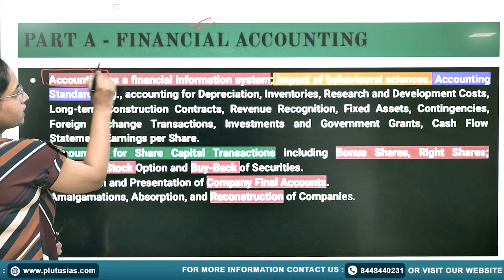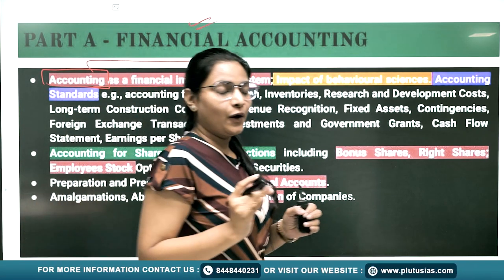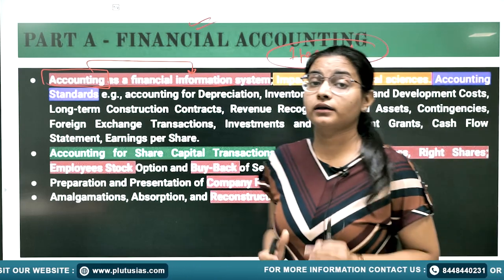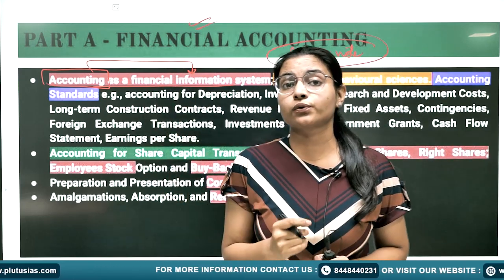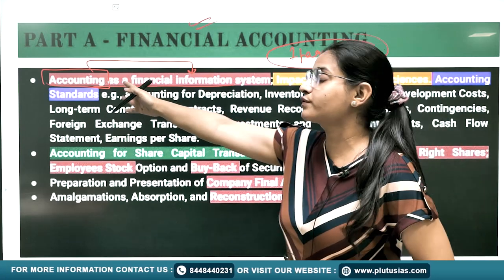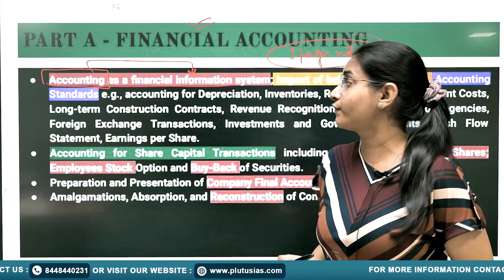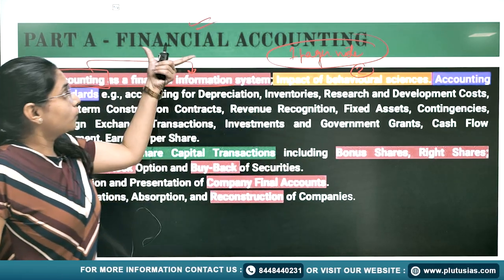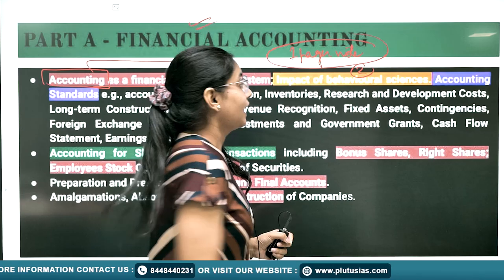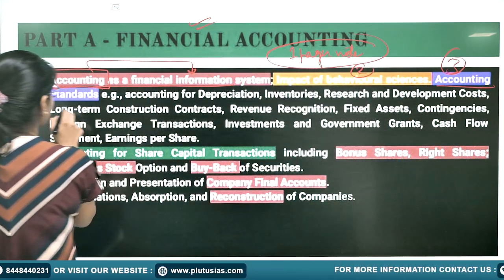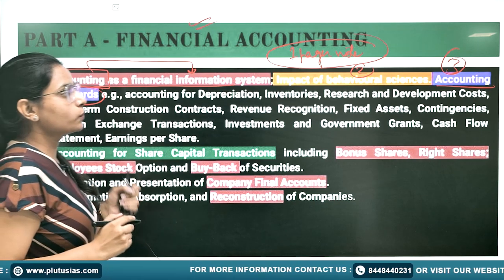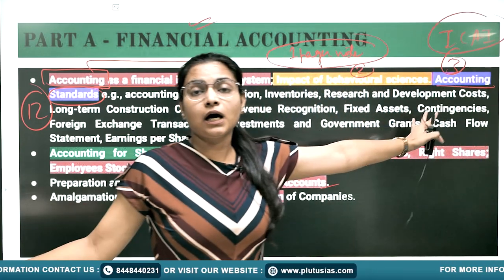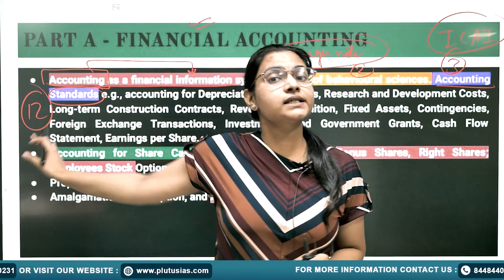In Financial Accounting, the first line says 'Accounting as a Financial Information System.' For theory, you should have at least a one-pager note for every topic so that if a direct question comes you are able to write it. If you see previous year questions, there are direct questions like 'How will you define Accounting as a Financial Information System?' The next part is the impact of Behavioral Sciences. The third category is Accounting Standards — there are around 12 Accounting Standards you need to prepare, as UPSC has listed only those 12.